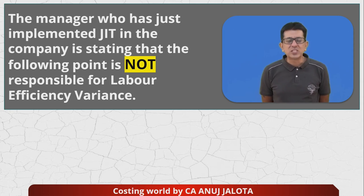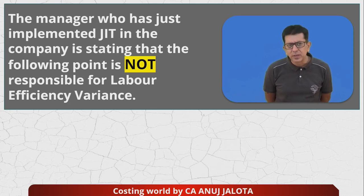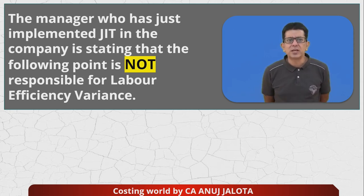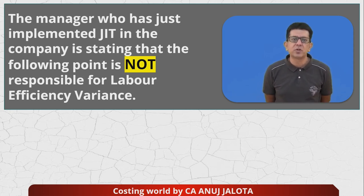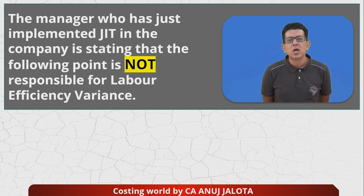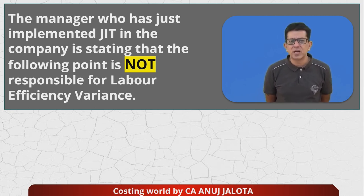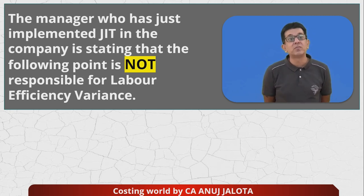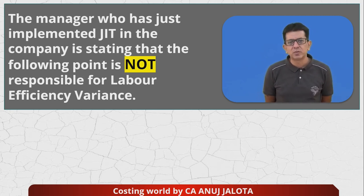The manager who has just implemented a JIT system in the company is stating that the following point is not responsible for labor efficiency variance. Labor efficiency variance is: how many hours workers should have taken for actual output versus how many hours they actually took. If they complete the work faster, variance is favorable; if slower, it is adverse.